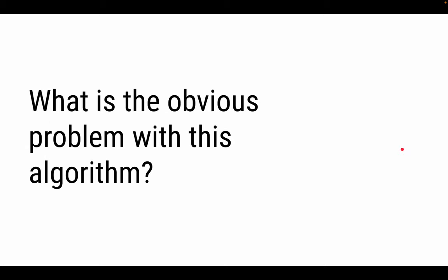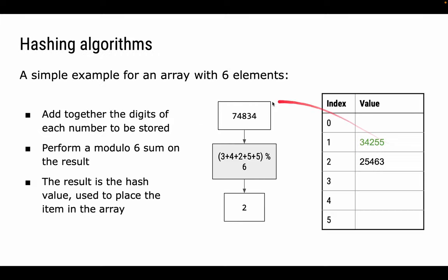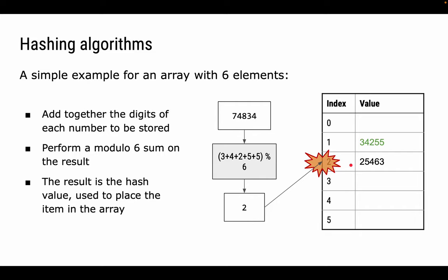It should be pretty obvious that there's a problem with this algorithm. For 74834: adding the digits gives a hash of 2 — but location 2 is already occupied. What's happened here is something called a collision. The hashing algorithm has given us a hash value pointing to an already-occupied location in the hash table, and we need to plan for how we're going to deal with these collisions.